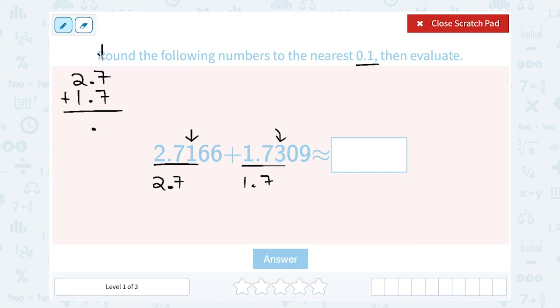And then I'm going to add each place. First, in the tenths place, 7 plus 7 gives me 14. So I'm going to put 4, carry the 1. 2 plus 1 gives me 3, plus that extra 1 gives me 4. So the answer to these two longer decimals should be really close to the answer that I got when I estimated. It's going to be about 4.4.